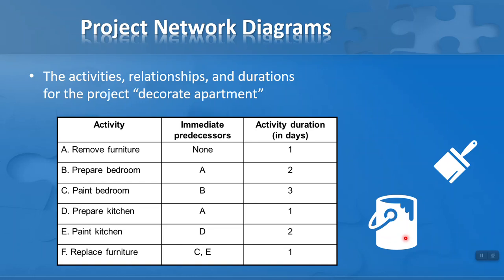Let's take a look at a very simple project: decorating my apartment. I've identified six activities. First, I need to remove the furniture. I've got two rooms — a bedroom and a kitchen — so I want to prepare the bedroom and paint the bedroom, then prepare the kitchen and paint the kitchen. When all of that is done, I put the furniture back. Activity A, remove furniture, has no immediate predecessors.